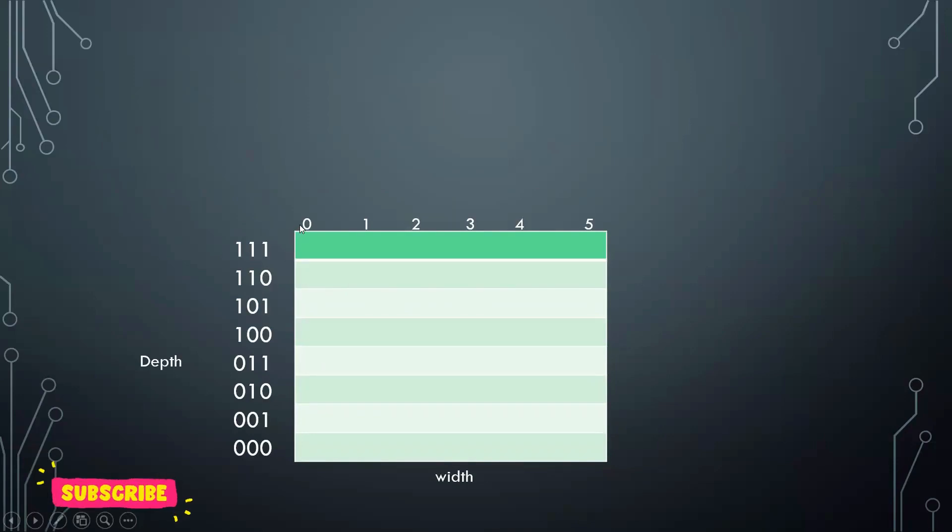And what is the width? Width is 0 to 5, so 6 is the width. Each memory location can write up to 6 bits. So the depth is the number of rows the FIFO has and how much data can be stored in each slot is the width of the FIFO.